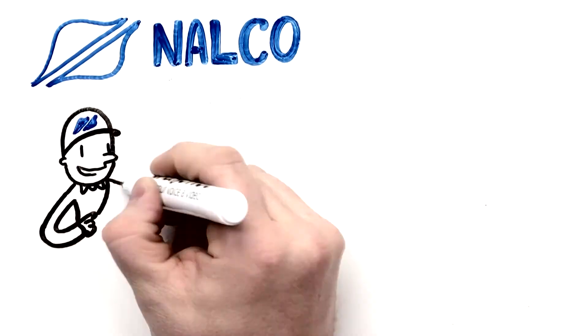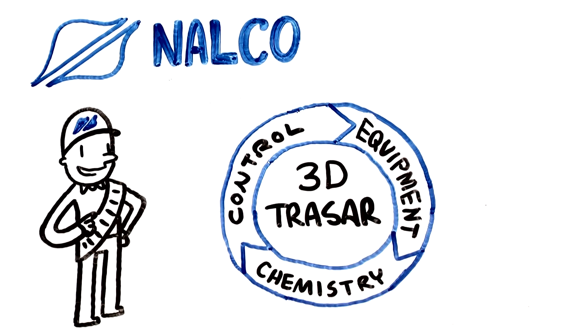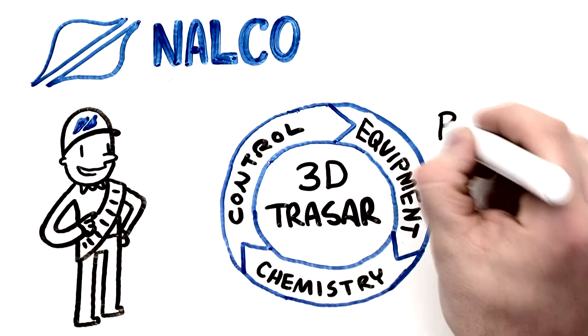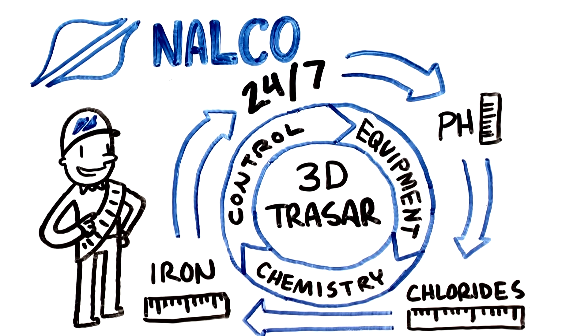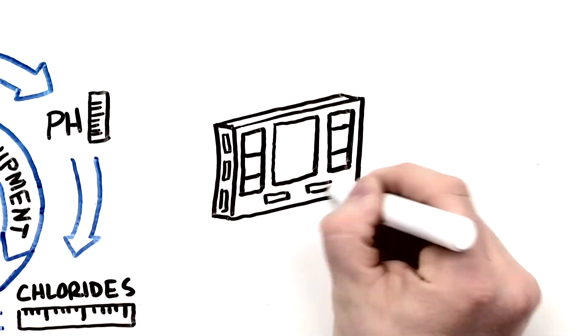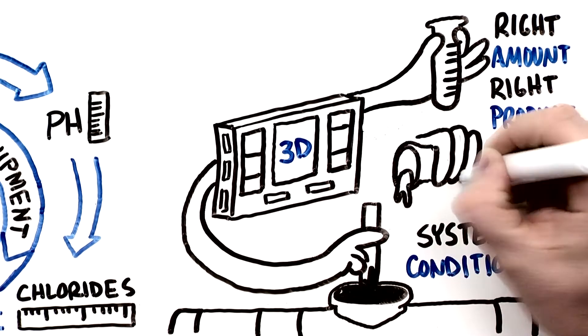NALCO understands those challenges. We combine chemistry with equipment and control schemes like 3D TRASAR for crude units, allowing us to continuously measure pH while measuring chlorides and iron up to 24 times per day. 3D detects system conditions, determines the right amount of the right product, and delivers it.